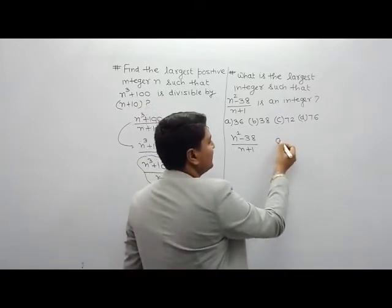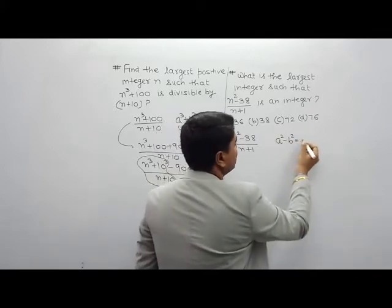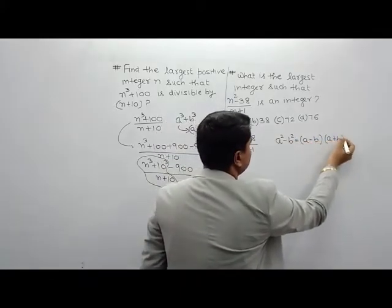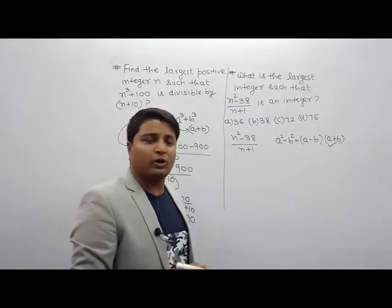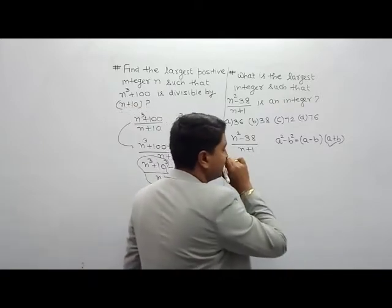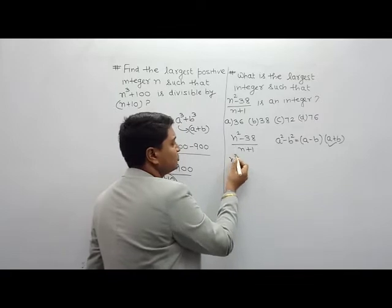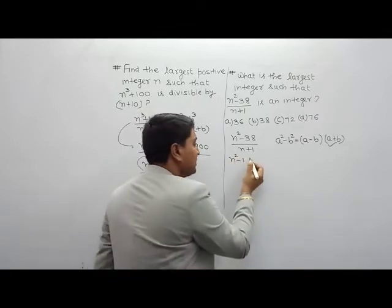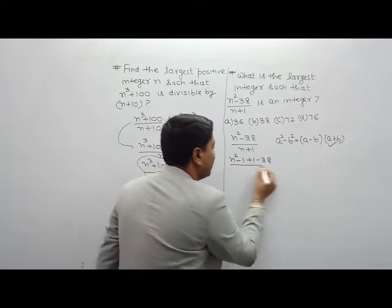I have an identity of a square minus b square. Can we say a square minus b square equals a minus b into a plus b? This is a plus b. Why do we make a form of a square minus b square? Can I write n square minus 1 plus 1 minus 30? Divide it by n plus 1.